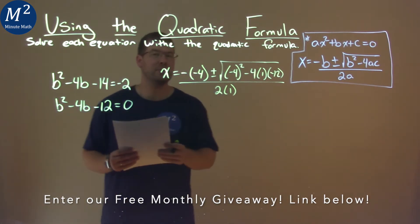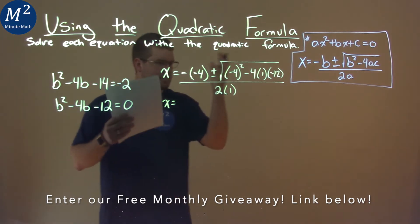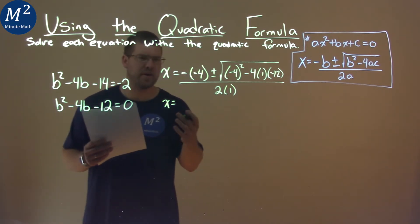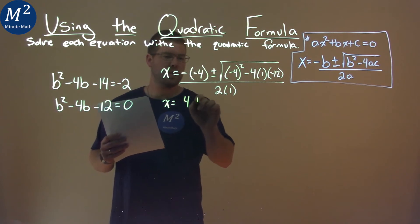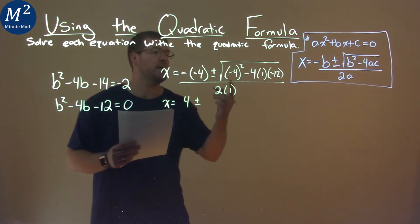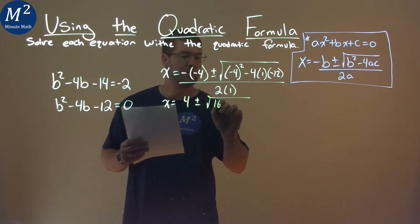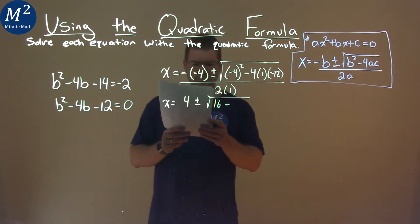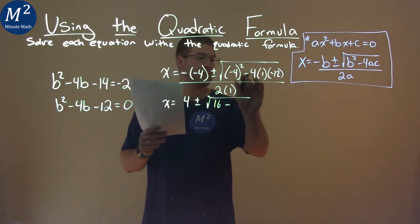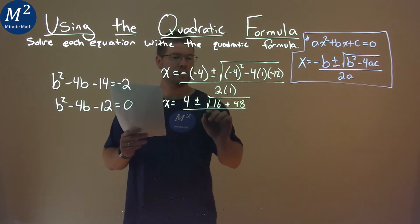So now from here I want to simplify this to get my x value. Negative negative 4 is positive 4, plus or minus, negative 4 squared is positive 16 so we have 16 here, and then minus, 4 times 1 times negative 12 is positive 48 because it's a double negative, all over 2 times 1 which is 2.